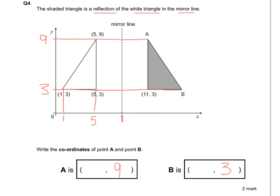The next bit is to work out the length of this side. Because that's 1 and that's 5, I know that's got a length of 4. So because that's 11, it's also got a length of 4, which means 11 plus 4 is 15. So I can see that that is going to be (15, 3), and another coordinate I can pick up easily is (11, 9).